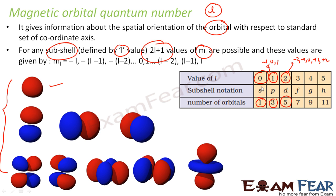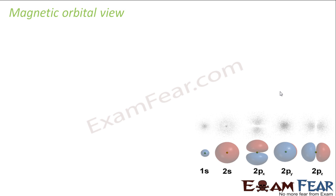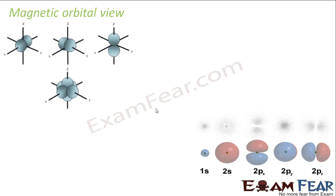For D there are 5 orientations, and similarly for F there are 7 orientations, and so on. Now let us take an overview of the magnetic orbital quantum number. For example, for the P orbital — the way it is arranged — this is Px, which is inclined to the X axis; Py because this orbital is along the Y axis; and Pz is along the Z axis.